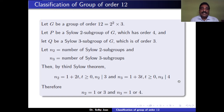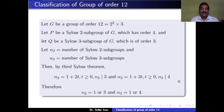Similarly, N3 = 1 + 3t and N3 divides 4, which is the index of Q in G. So 1 + 3t divides 4, which is possible only for t = 0 or t = 1. Therefore, N3 = 1 or 4.